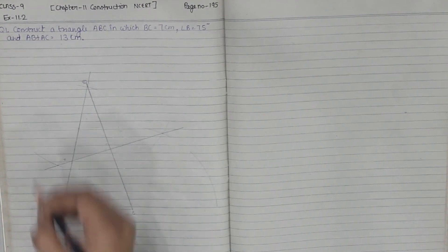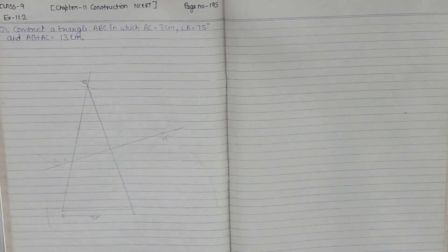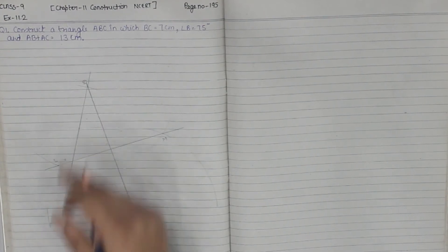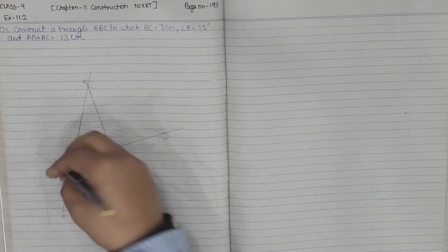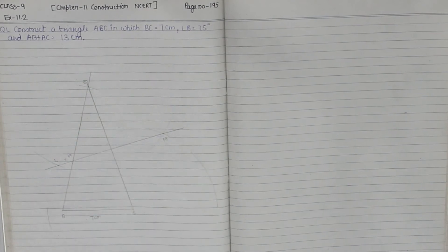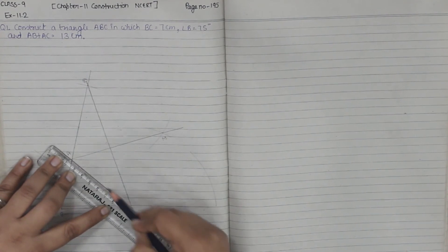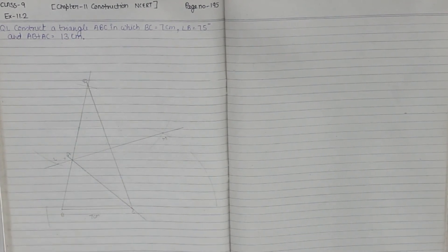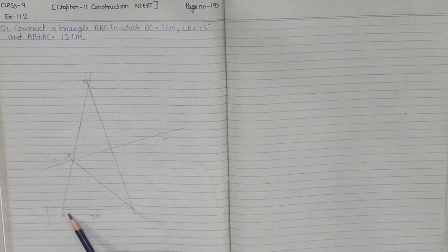Now we have drawn the perpendicular bisector. This is point L and this is point M. The point which is intersecting at the line segment BD — this is the point A we are having. Now we are going to join point A with C. This is the required triangle ABC with angle B equal to 75 degrees and AB plus AC equal to 13 centimeters.